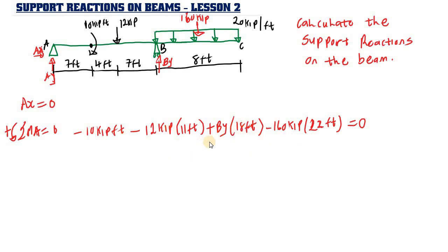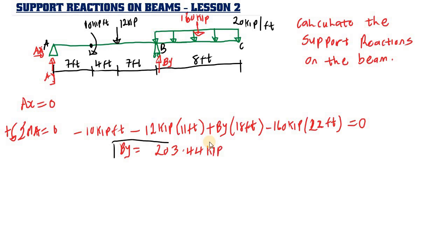It is straightforward to use a calculator to solve for By. Solving gives By equal to 203.44 kip. Since By is positive, our assumption is correct — By is indeed acting upward.